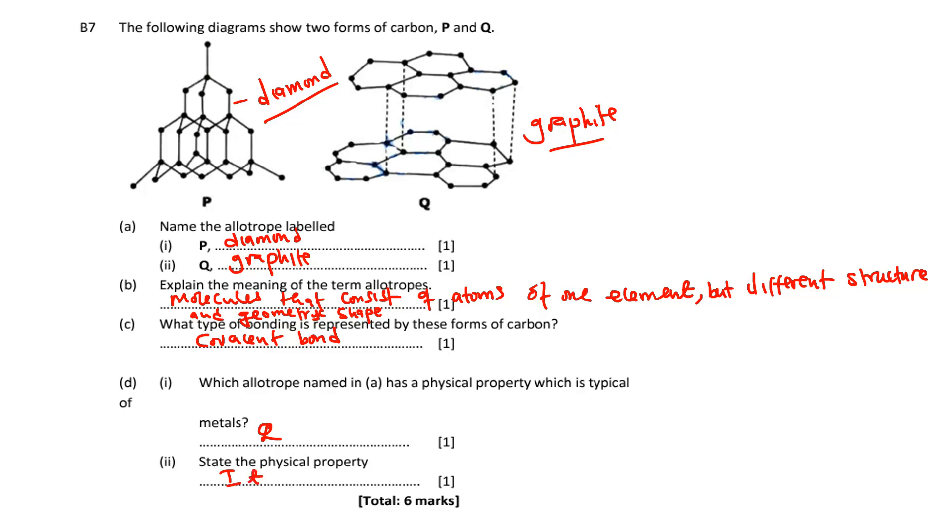State the physical property. So this property of a typical metal: they conduct electricity and heat, or good conductors. We can just say good conductor of electricity and heat. That is the property of a typical metal.